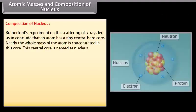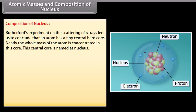Composition of nucleus. Rutherford's experiment on the scattering of alpha rays led us to conclude that an atom has a tiny central hard core. Nearly the whole mass of the atom is concentrated in this core. This central core is named as nucleus.